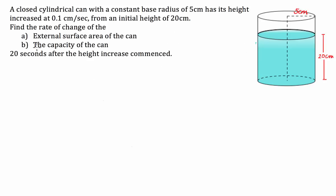So let's have a look at part A to start with. We're looking for the rate of change of the external surface area of the can — so we're looking for DSA over DT, the change in surface area over the change in time. Whenever it says the rate of change, usually it's referring to something over DT.